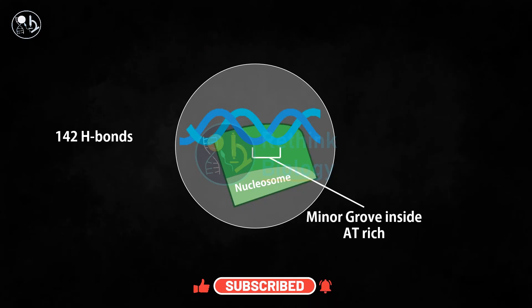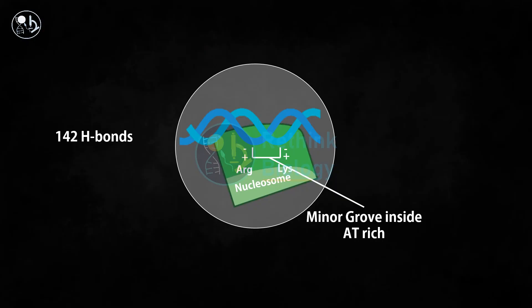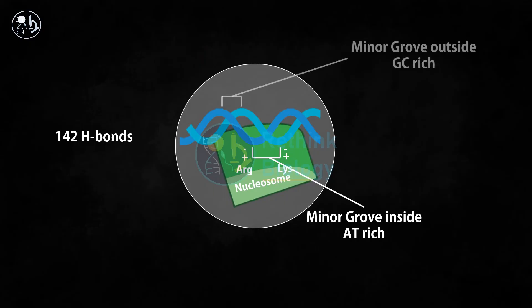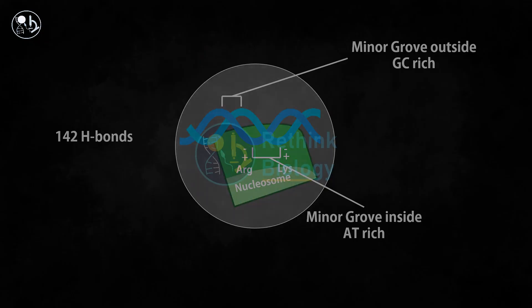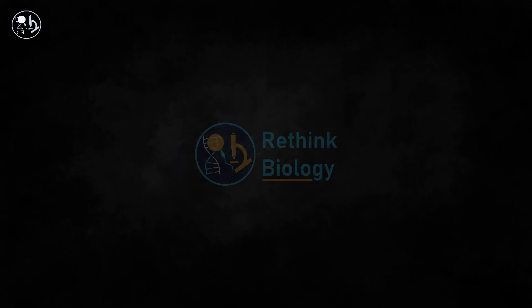The AT-rich minor groove of DNA binds with the arginine and lysine residues on the histone core proteins. These amino acids are positively charged so that they can tightly bind to the negatively charged DNA. The outer side of the minor groove of DNA is GC-rich.